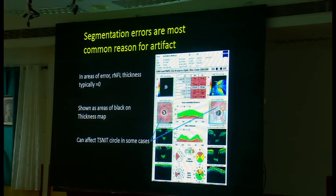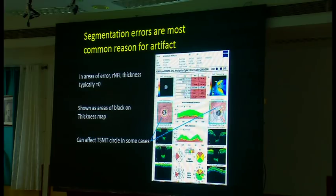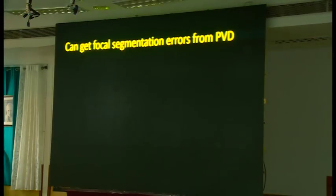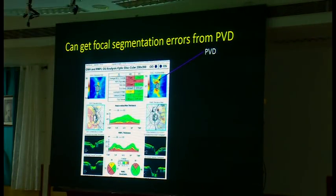On the deviation map, areas that aren't being segmented are shown as highly deviant from normal because a thickness of zero is interpreted as severely abnormal, even though it just means segmentation failed. This can cross the TSNIT circle — the circle around the optic nerve head — and you can see thickness going to zero at that location where there was a segmentation error.